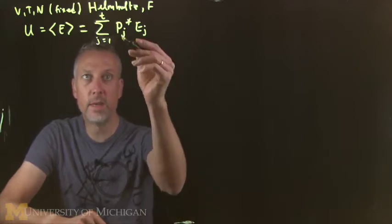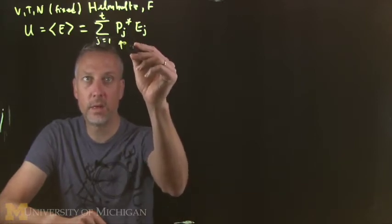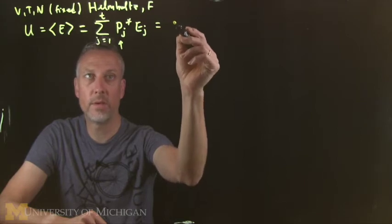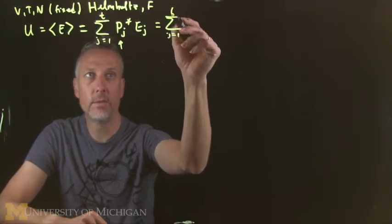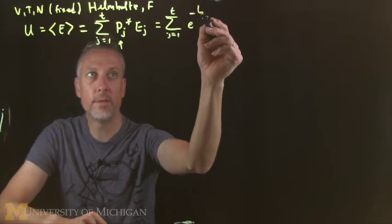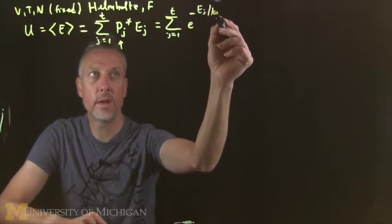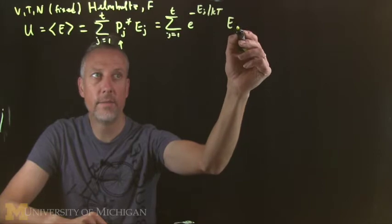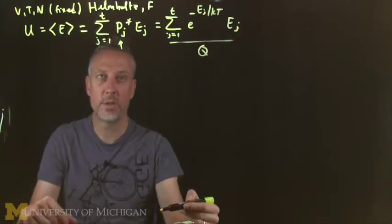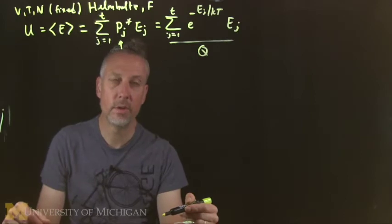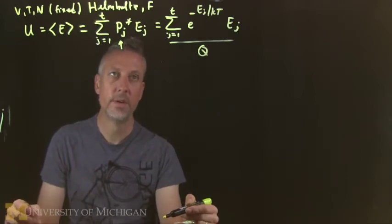So when we do that, we put in here what we know will be the Boltzmann distribution for these populations, or these probabilities. And so we have the sum on j, and we have e to the minus e_j over kT times e_j. And then we have our famous normalization factor, which is the partition function.